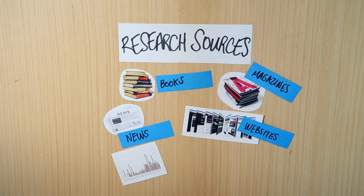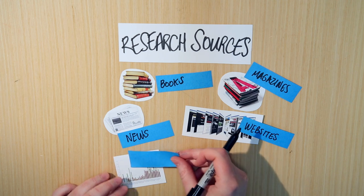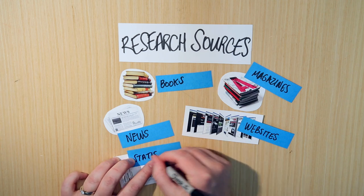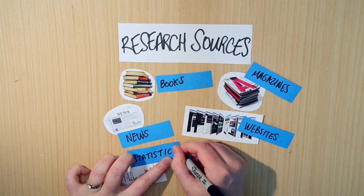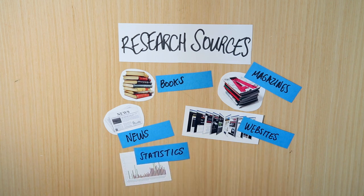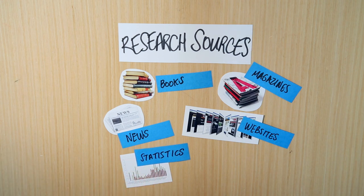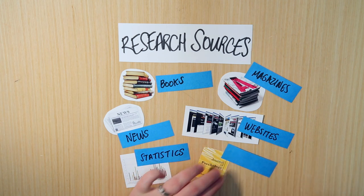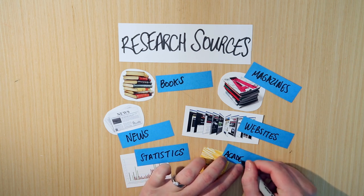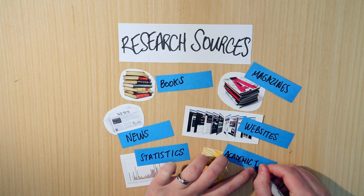Another really common one to think about is statistics. If you want to look into the demographics of something, socioeconomic data, or just how many people are doing something, statistics are great and are usually published by government bodies. And then one that might be new to you — one you may never have used before — is academic journals. I'm going to explain a little bit more about what they are.